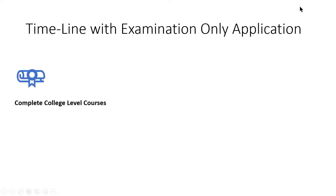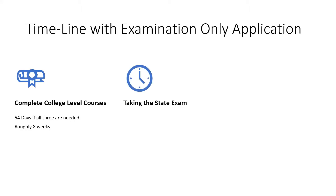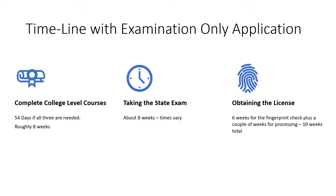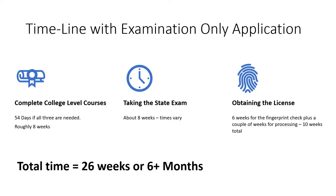So how long does this process take if you're going to take the exam only and then apply later? You do the three college-level courses, which will take 54 days if you need all three — roughly eight weeks. Then you apply and take the state exam, which takes about eight more weeks, though those times can vary. Then in order to get your license, the fingerprint check takes six weeks, plus a couple more weeks for processing, easily 10 weeks total. When you add all of this together, you're looking at something in the neighborhood of 26 weeks or a little over six months.